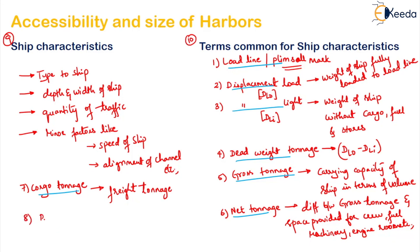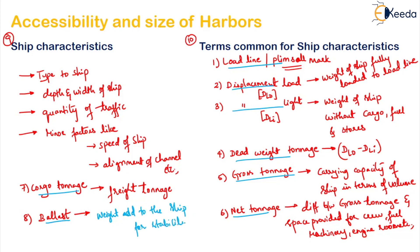The eighth and last term is ballast. We have studied this term in railway engineering as well. Here, the weight added to improve the stability of the ship when it has discharged its cargo is known as ballast. So this is all about the accessibility and size of harbours. Hope you have understood it. Thank you.